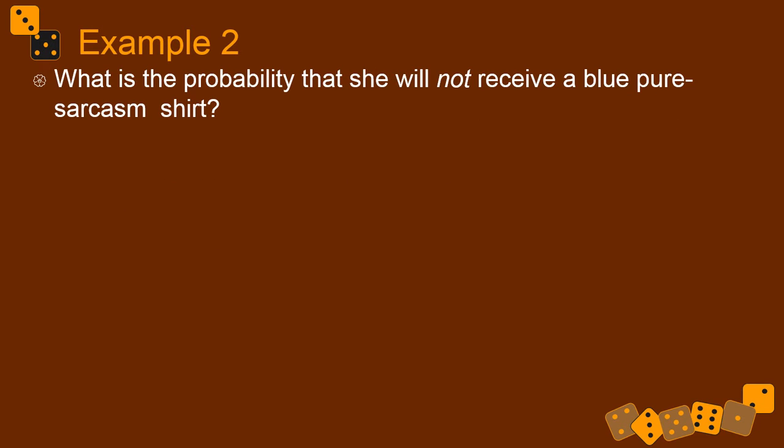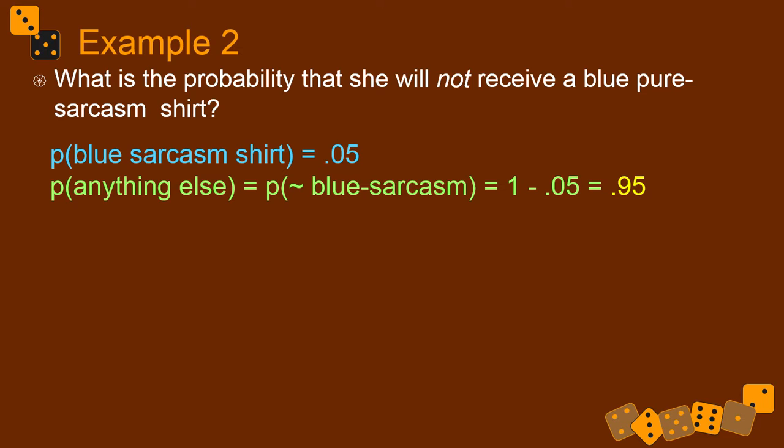So what's the probability that she won't receive a blue sarcasm shirt? So not blue sarcasm shirt. Of course, that can be any color other than blue if it's still sarcastic, or any topic other than sarcasm if it's still blue, or anything that's not blue and not sarcastic. So there's a lot of possibilities there. So if the probability of what she wants is 0.05, then the probability of what she doesn't want is 0.95.